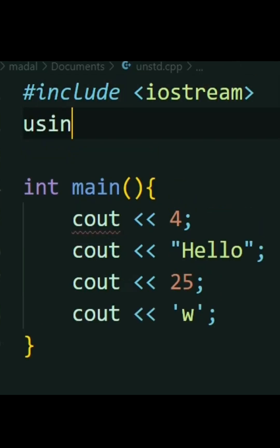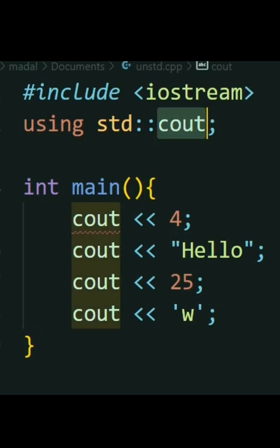instead of using the whole namespace, you can say something like using std::cout. Now, the program knows that every time you talk about cout, you're talking about the cout that's inside the std namespace and not some other cout that is in some other namespace, while not getting repetitive with your code.